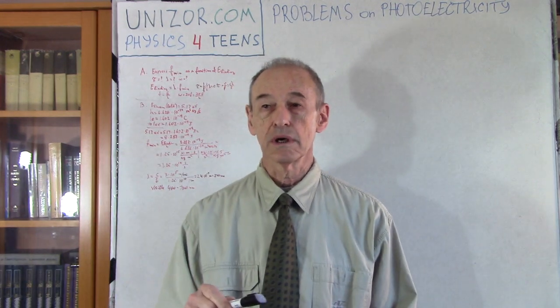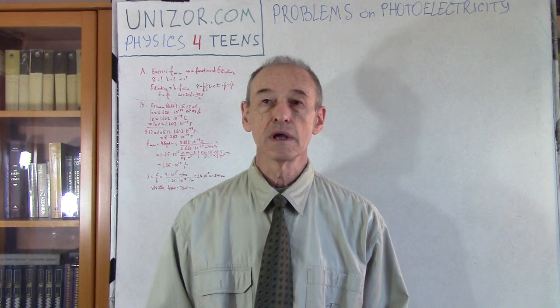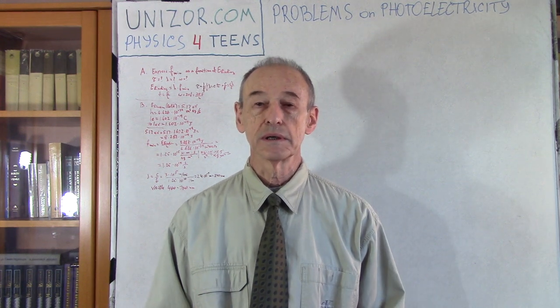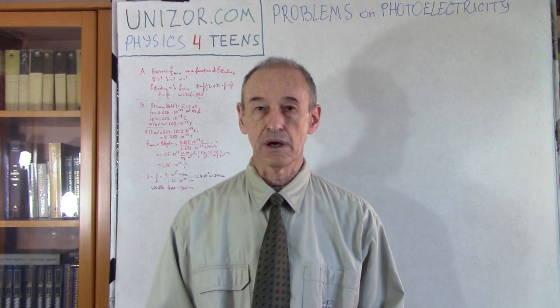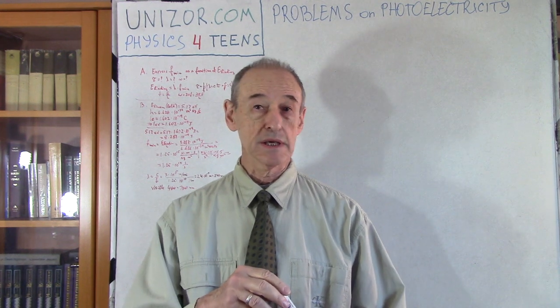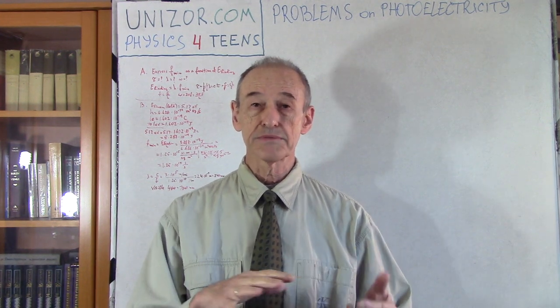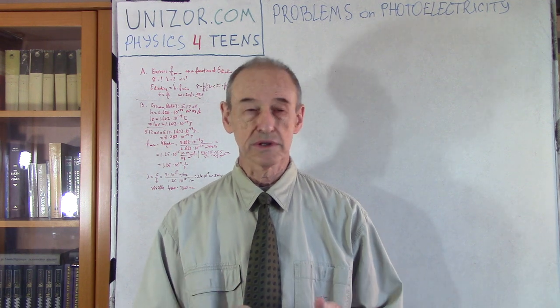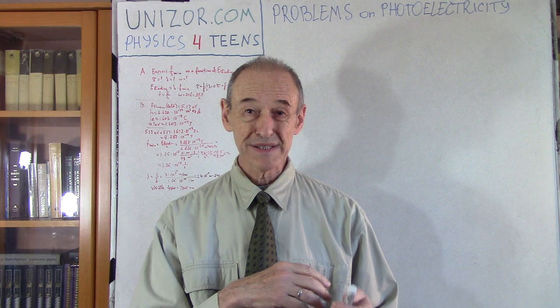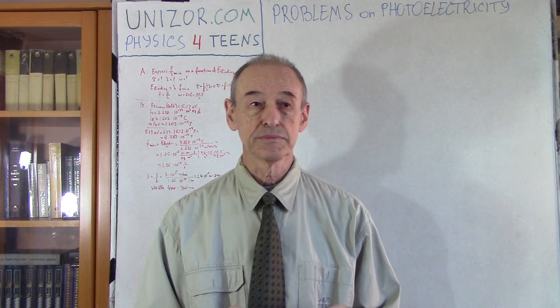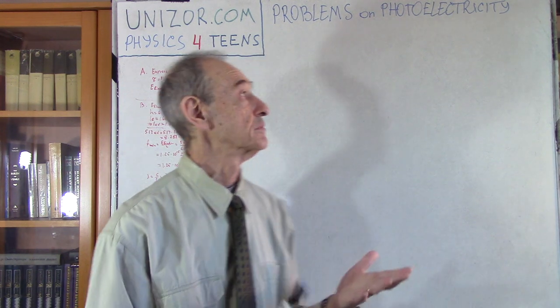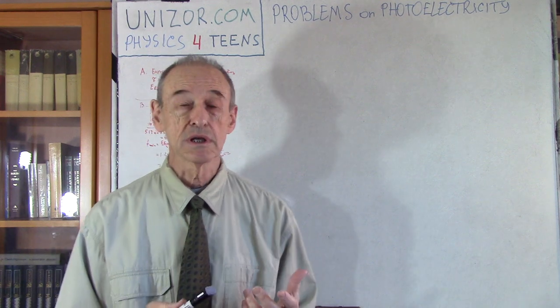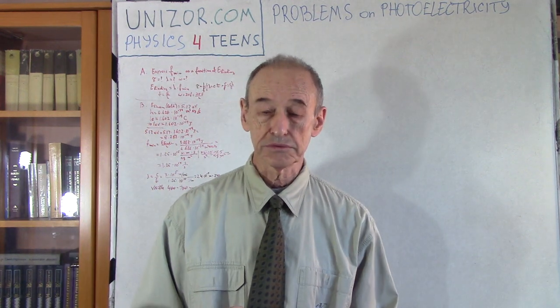This is a continuation of previous two lectures where these effects of light, when the light hits the surface of metal like silver, it can basically kick off electrons. This is the photo effect, photoelectricity, when electrons are kicked off.